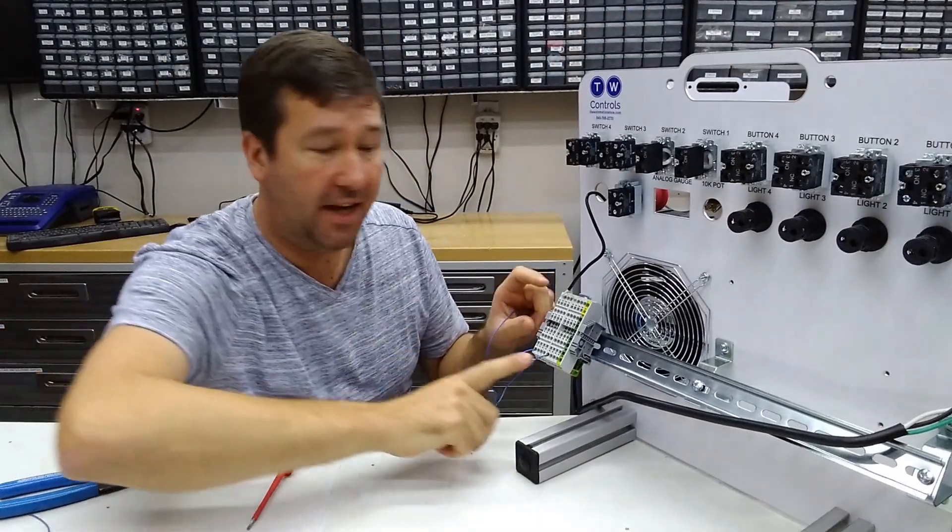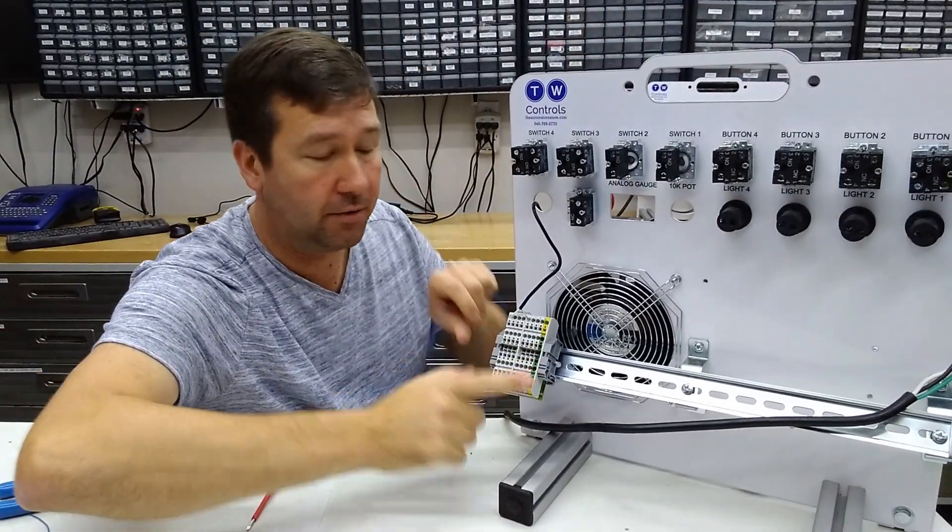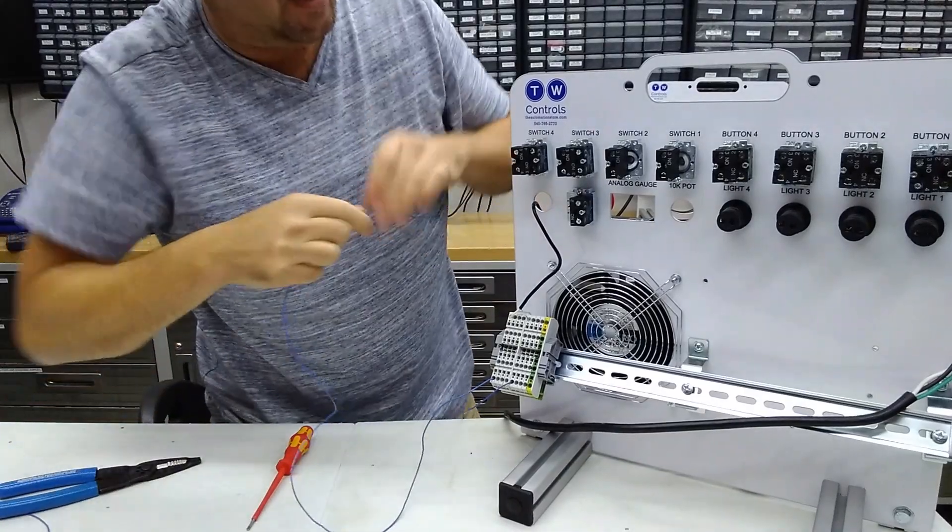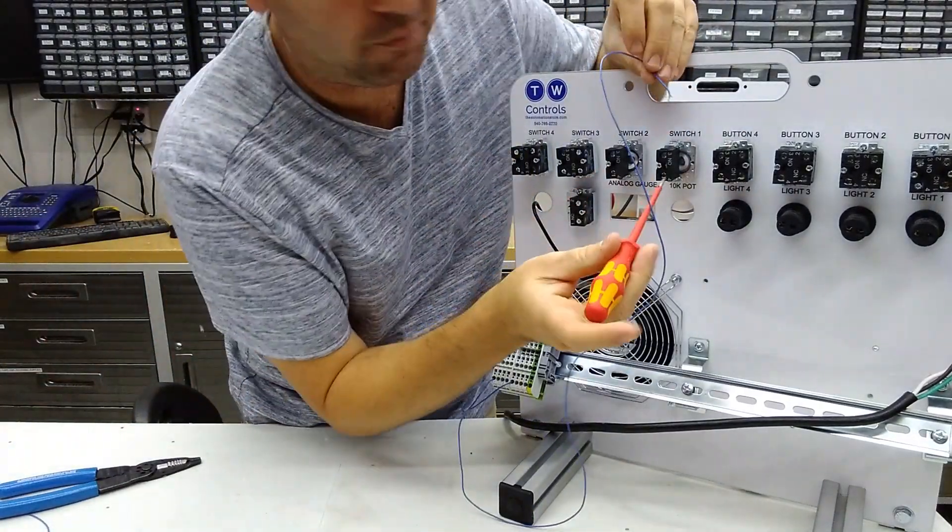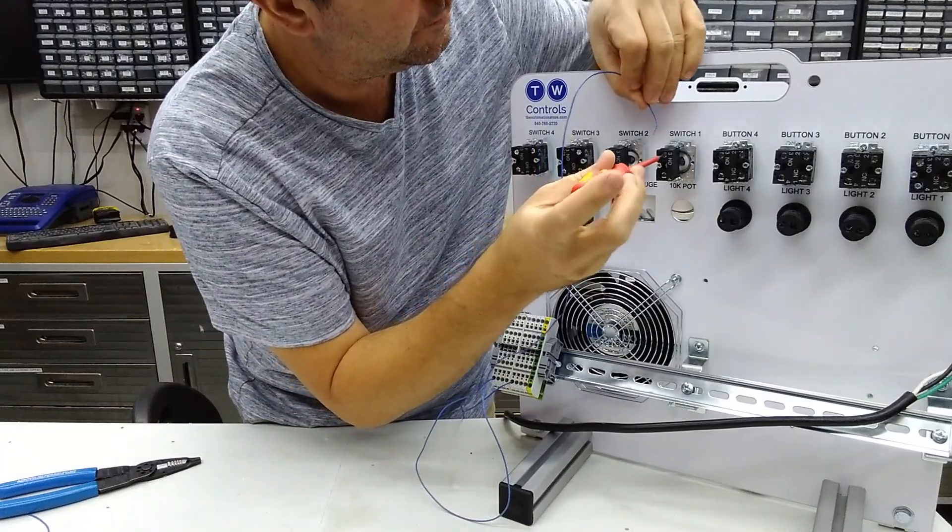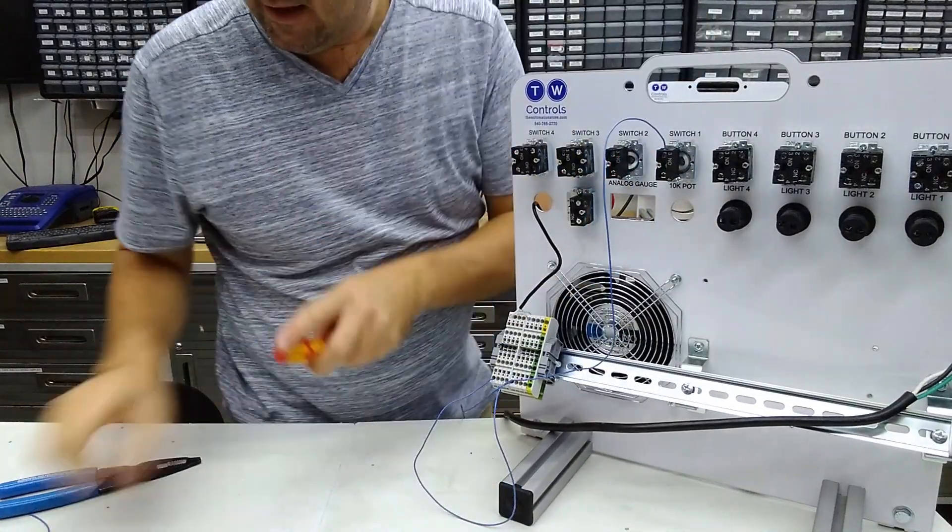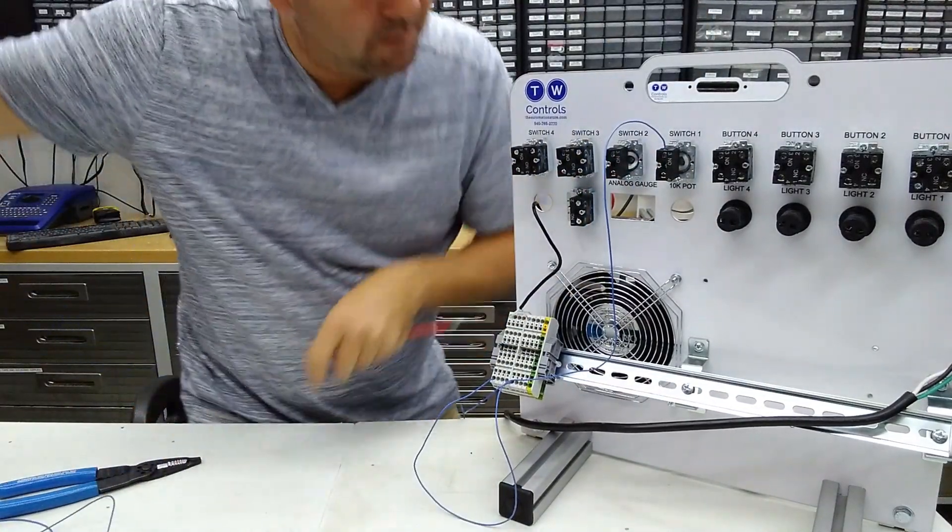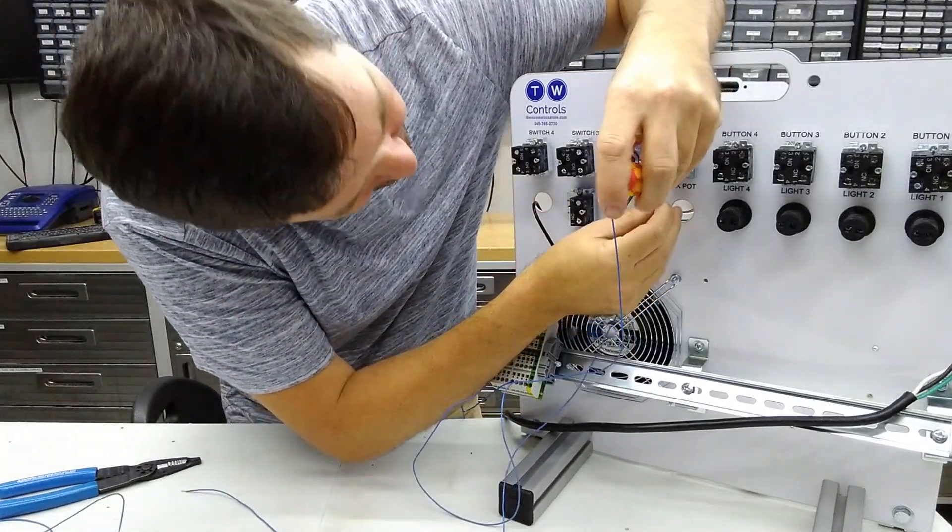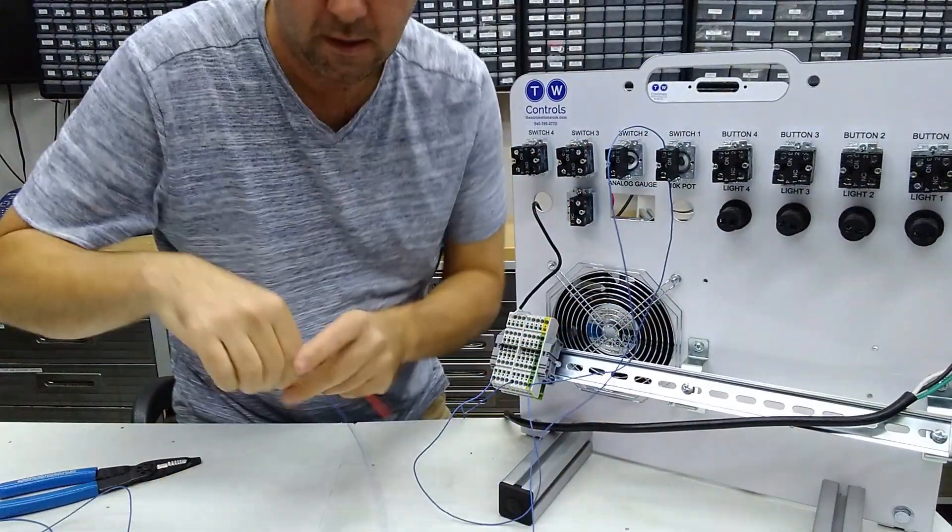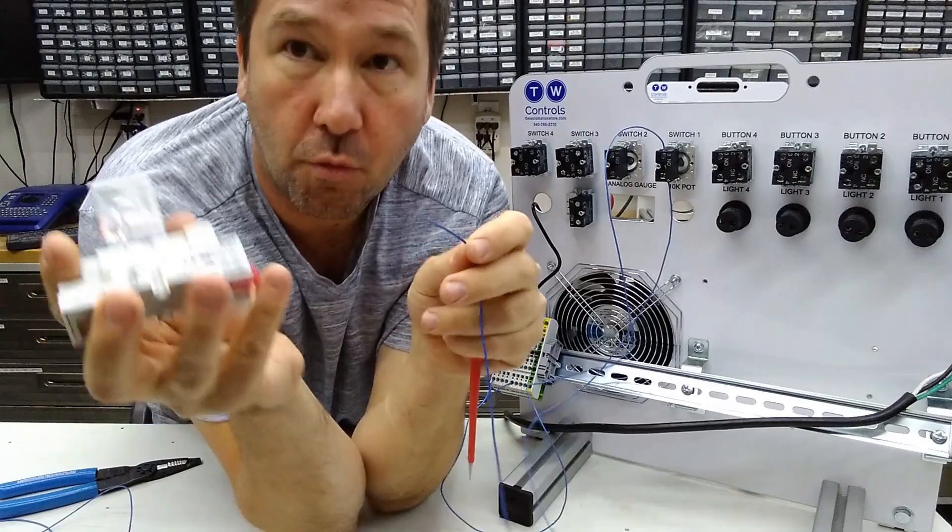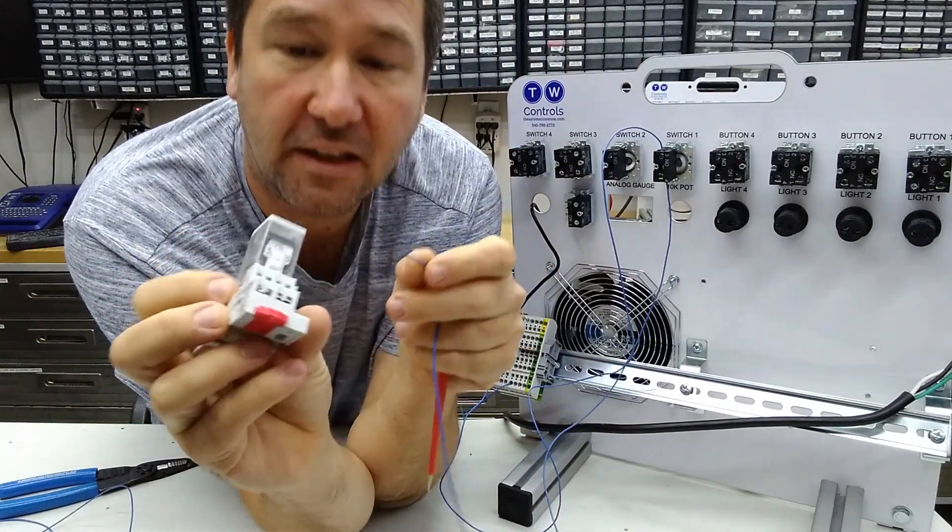And to do that, we're going to take the plus 24 volts of our power supply and we're going to connect it to the top of switch one. And then we're going to go from the bottom of switch one to one of the coil terminals on our relay.